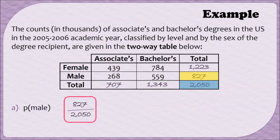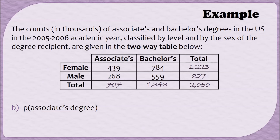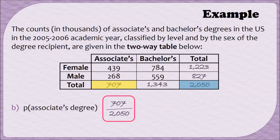Example B asks for the probability of an associate's degree. When I look down the associate's column, the total is 707, so that's going to be the numerator of our proportion. Since we're looking out of all of the people, we still use a denominator of 2,050. Since this fraction is in simplest form, 707 over 2,050 is our answer.